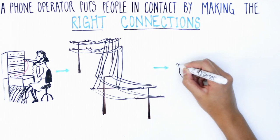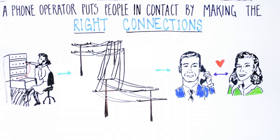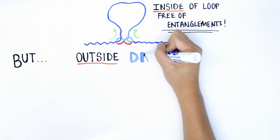This is analogous to an efficient switchboard operator who puts people at a distance in contact with each other by making the right connections and avoiding wrong numbers. Once the DNA is fed through the loop, it is free from entanglements.